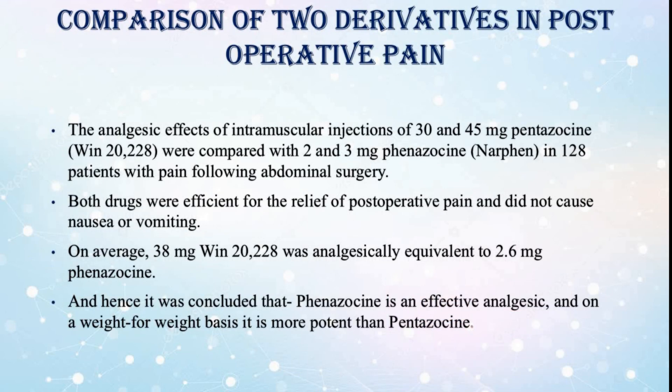Comparison of two derivatives in post-operative pain. The analgesic effects of intramuscular injections of 30 and 45 mg pentazocine were compared with 2 and 3 mg phenazocine in 128 patients with pain following abdominal surgery. Both drugs were efficient for the relief of post-operative pain and did not cause nausea or vomiting. On average, 38 mg pentazocine was analgesically equivalent to 2.6 mg phenazocine, and hence it was concluded that phenazocine is an effective analgesic, and on a weight-for-weight basis it is more potent than pentazocine.